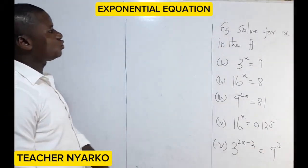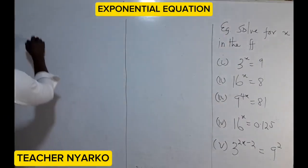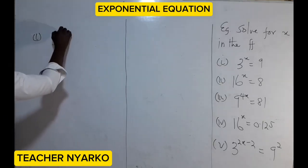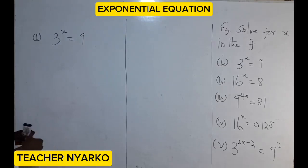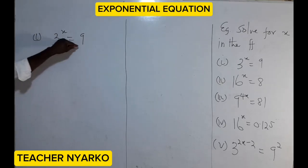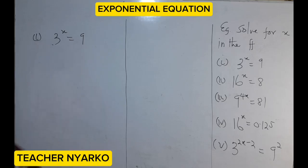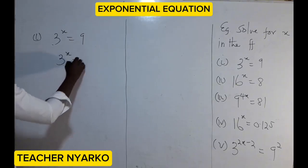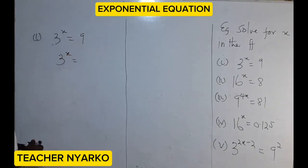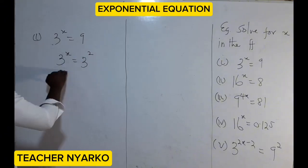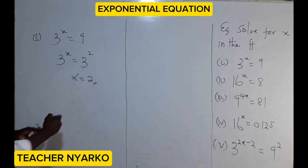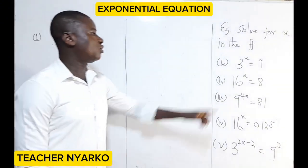Let's look at this question — solve for x. The first one is 3 exponent x equals 9. The unknown quantity is x, meaning 3 raised to a certain power must equal 9. You can quickly tell x is 2 because 3 squared equals 9. To solve it formally: 3 exponent x equals 3 exponent 2, since 9 can be expressed with base 3. The bases are the same, so x equals 2.